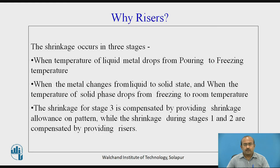Now let us move further — why are risers required? Shrinkage occurs in three stages while solidifying the molten metal: when the temperature of liquid metal drops from pouring to freezing temperature; when the metal changes from liquid to solid state; and when the temperature of the solid phase drops from freezing to room temperature. The shrinkage for stage 3 is compensated by providing shrinkage allowance on the pattern, while the shrinkage during stages 1 and 2 are compensated by providing a riser.